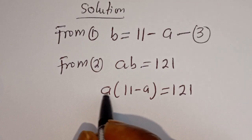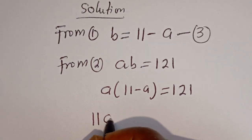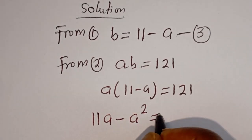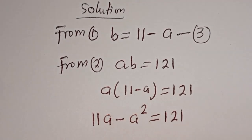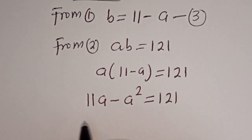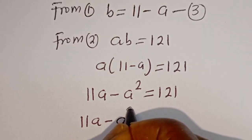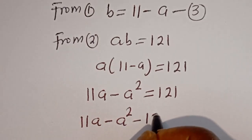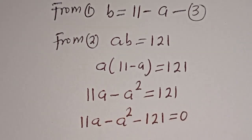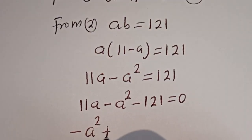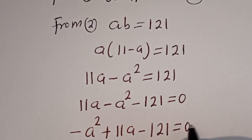Let's open the bracket. A multiplied by 11 is 11A, minus A multiplied by A is A squared, so 11A minus A squared is equal to 121. Let's bring 121 to this side: 11A minus A squared minus 121 is equal to 0. Let's write this in standard form: minus A squared plus 11A minus 121 is equal to 0.